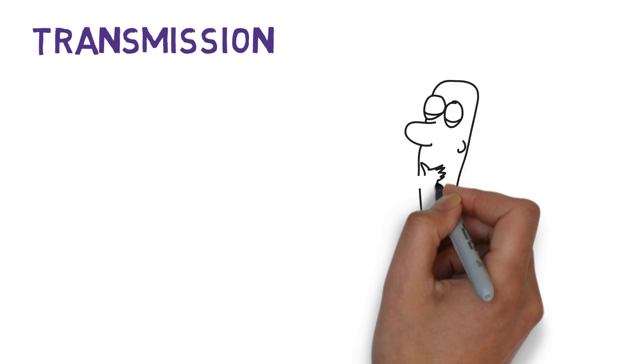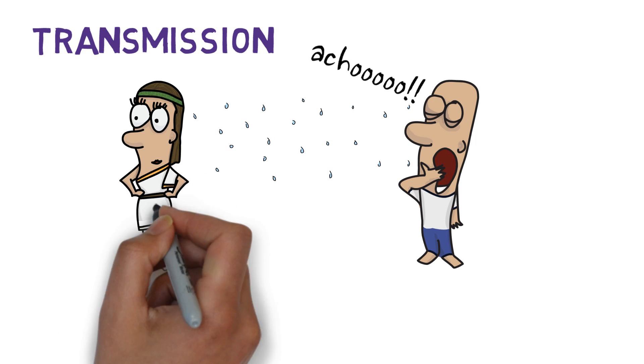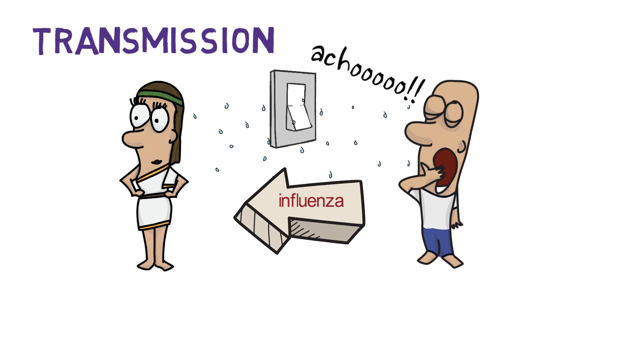How does it spread? When a person with the flu coughs or sneezes, they produce droplets that contain the influenza virus. People can catch the flu virus through the air or if they touch something that is contaminated with the virus and then touch their nose, mouth or eyes.